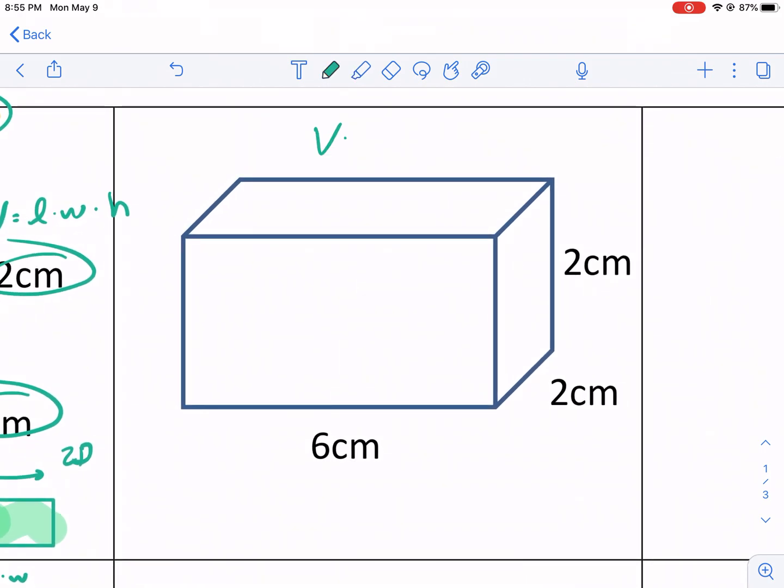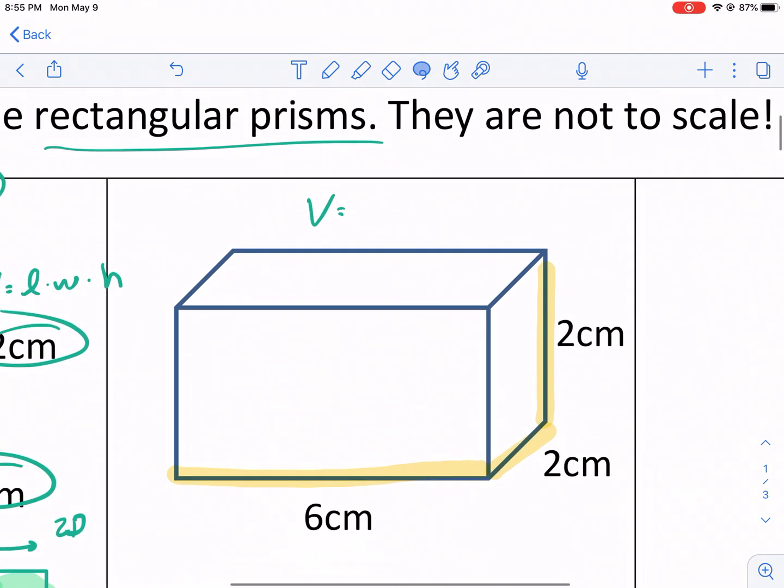If I'm going to do another example here, my volume is going to be the three dimensions multiplied by each other. 6 times 2, length times width, times that height of 2. Again, these heights need to be the same for it to be a prism. I'm going to do 6 times 2 times 2. 6 times 2 is 12 times 2 is 24.